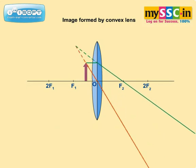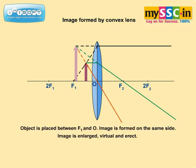When the object is placed between F1 and O, the image is formed on the same side as that of the object. The image is enlarged, virtual, and erect.